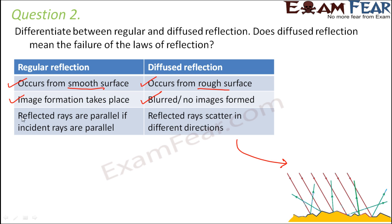In regular reflection, reflected rays are parallel if incident rays are parallel. So if all the incident rays are parallel, in case of regular reflection the reflected ones will also be parallel to each other. But in case of diffused reflection, the incident rays are parallel but the reflected ones are all scattered in various directions. That is how we can differentiate.